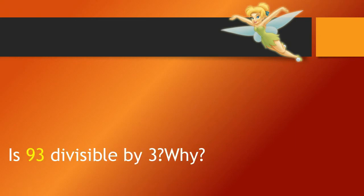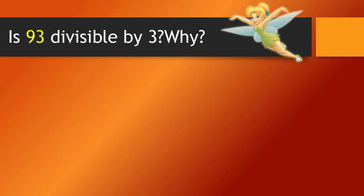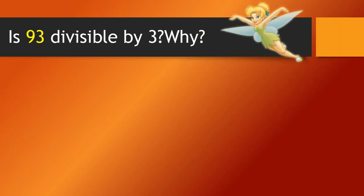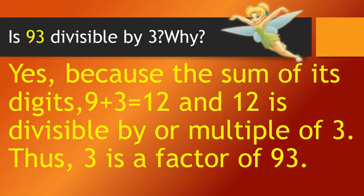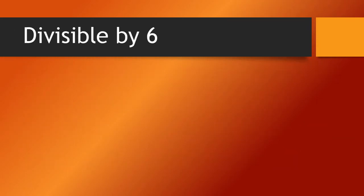Is 93 divisible by 3? Why? Yes, because the sum of its digits, 9 plus 3, equals 12, and 12 is divisible by — or a multiple of — 3. Thus, 3 is a factor of 93.